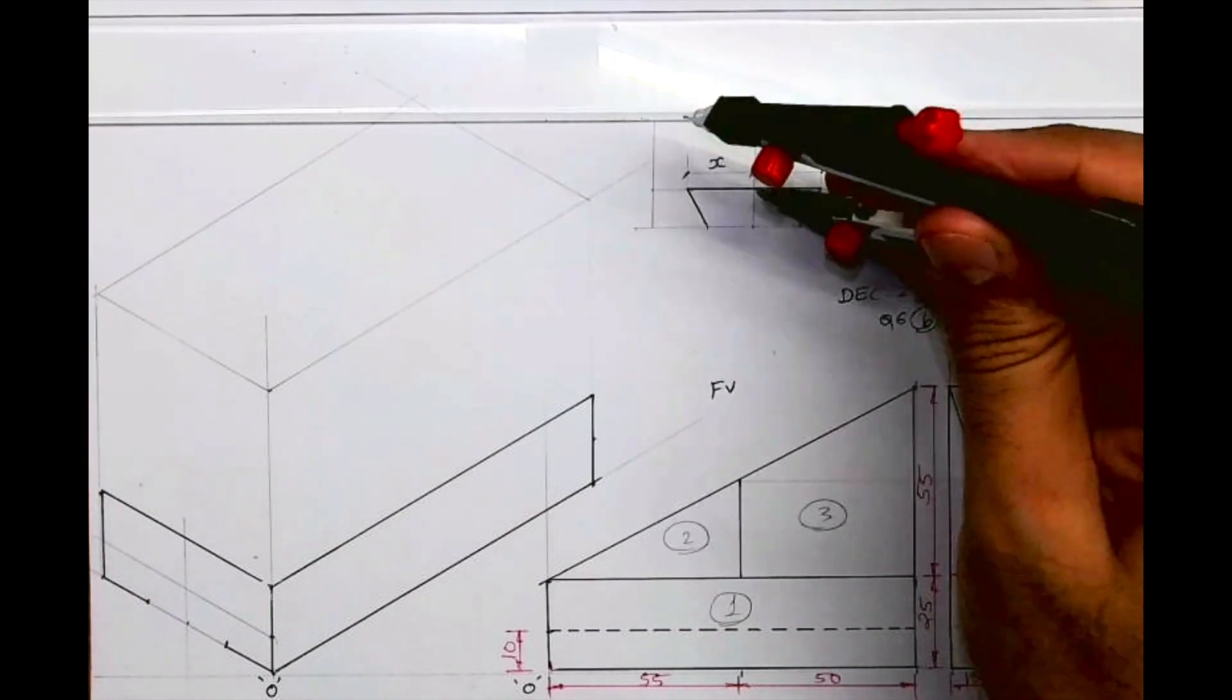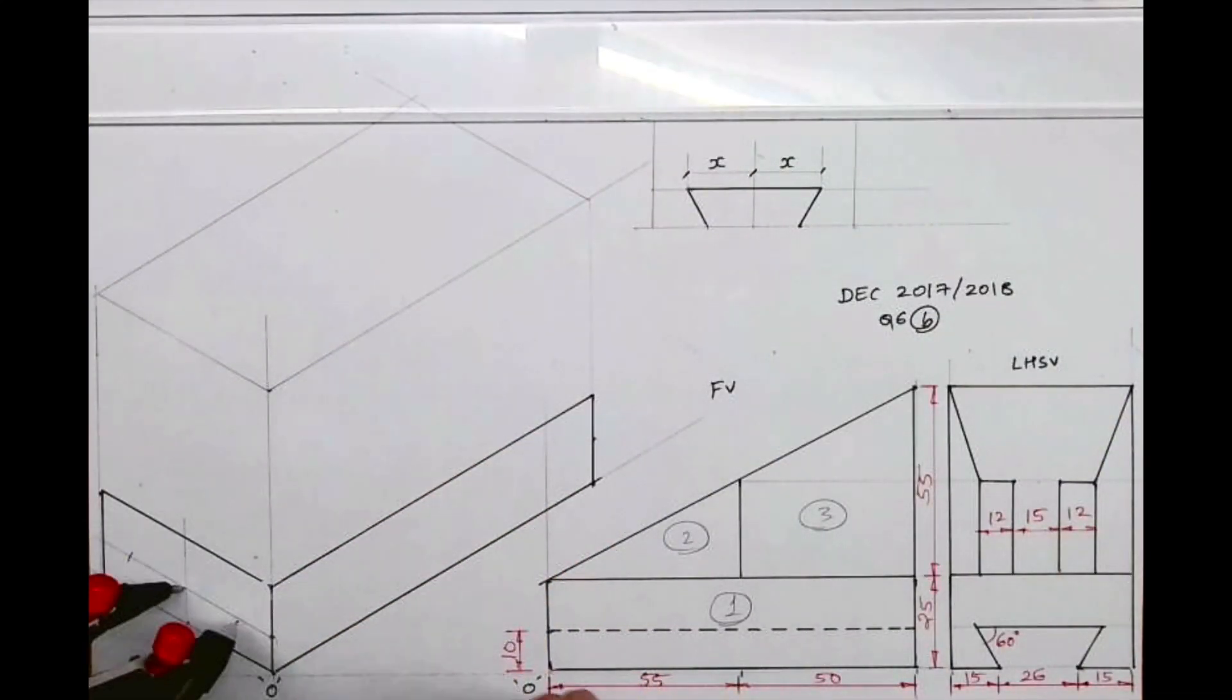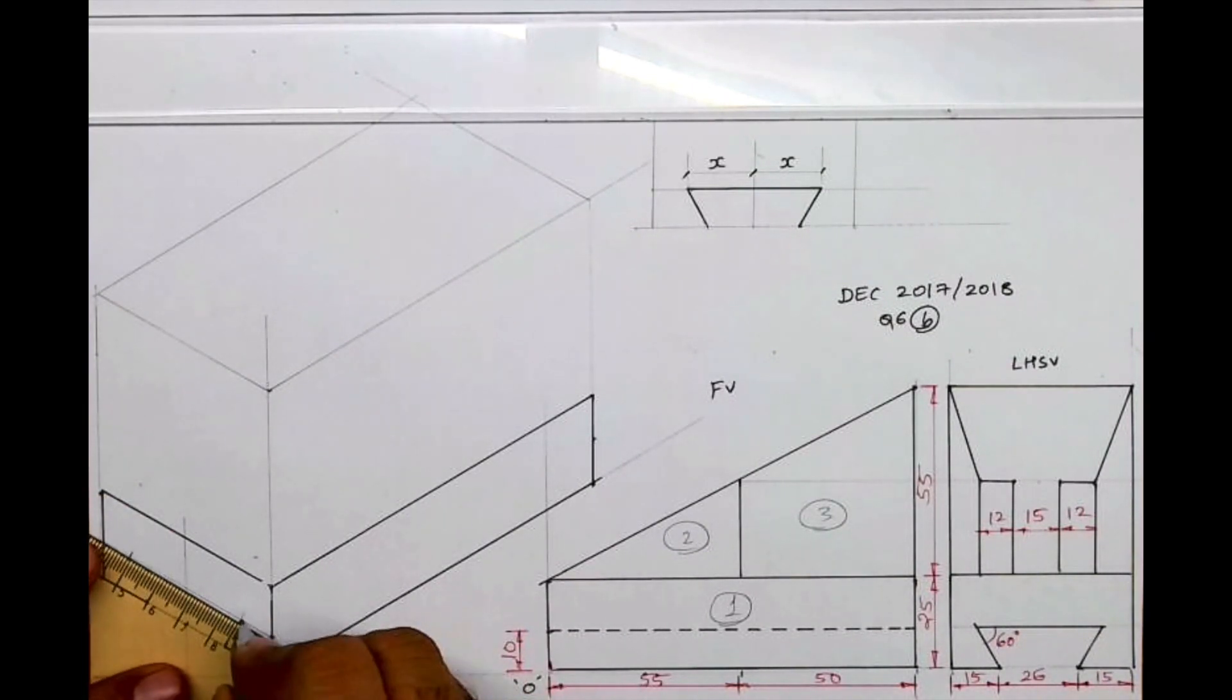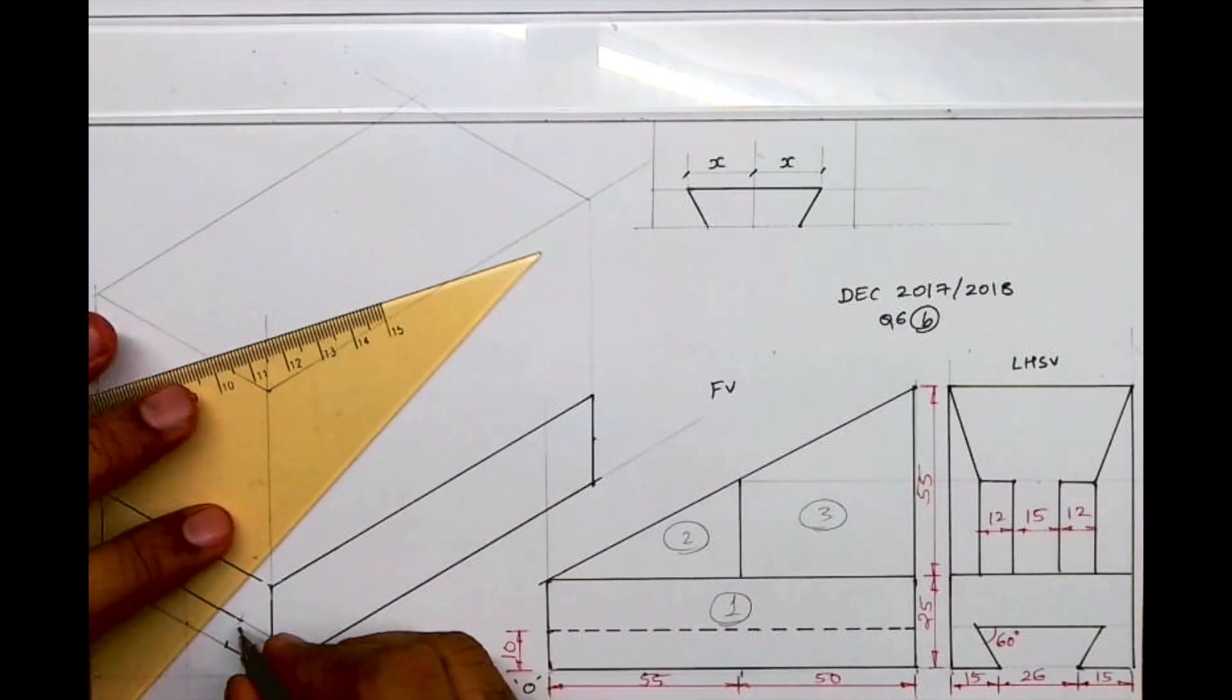And then I will take x and I will cut on both sides. So what I have done, I have transferred that angular distance into linear distance. Remember that. So we are done with this dovetail part.